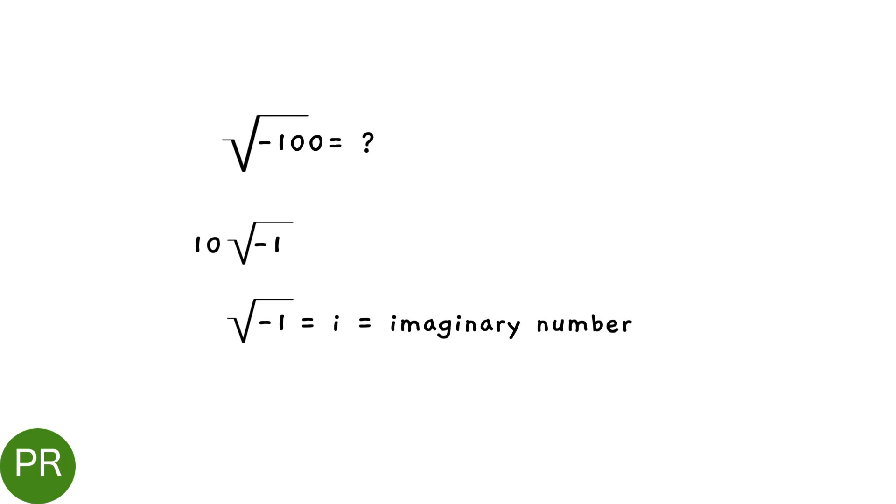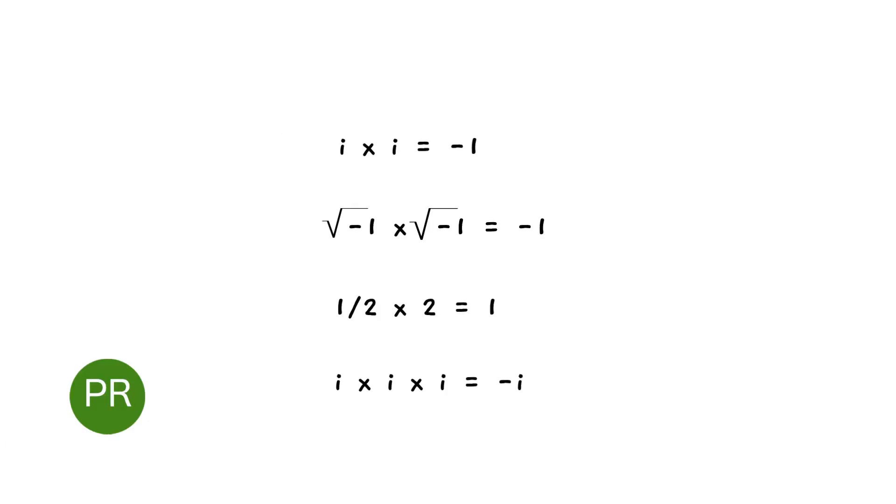Now we are stuck with minus 1. What do we do with it? The square root of minus 1 is undefined. And it's called an imaginary number. Mathematicians came up with this idea. Mathematicians do have imagination. Believe me.